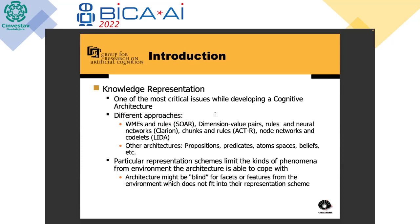For example, the Soar cognitive architecture uses working memory elements and rules. The Clarion cognitive architecture uses dimension-value pairs, rules, and neural networks. ACT-R uses chunks and rules. The LIDA cognitive architecture uses node networks and components. Other architectures use things like propositions, predicates, atom spaces, beliefs, and other kinds of representations.